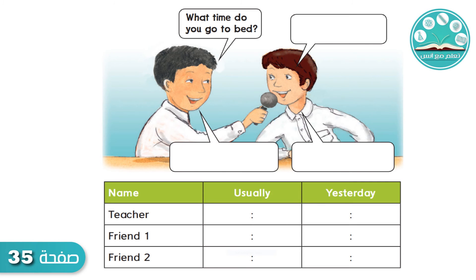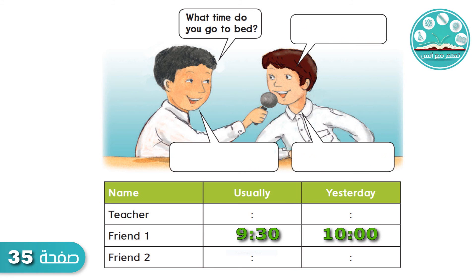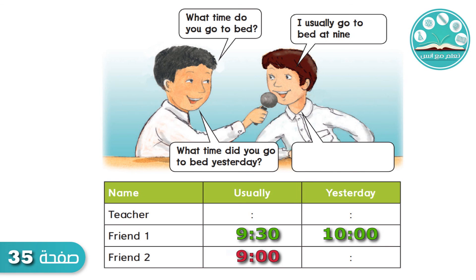What time do you go to bed? I usually go to bed at 9:30. What time did you go to bed yesterday? Yesterday, I went to bed at 10 o'clock. What time do you go to bed? I usually go to bed at 9 o'clock. What time did you go to bed yesterday? Yesterday, I went to bed at 9:30.